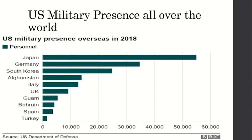Another key part of the US commitment to European defense is the European Deterrence Initiative, launched after Russia's intervention in Ukraine in 2014. Despite Trump's warnings about the level of US financial commitment to NATO, the US is planning to increase this budget by 40% in 2018, bringing it to $4.7 billion — compared to just $789 million in 2016 under President Obama. So Donald Trump is actually planning to spend more on defense.